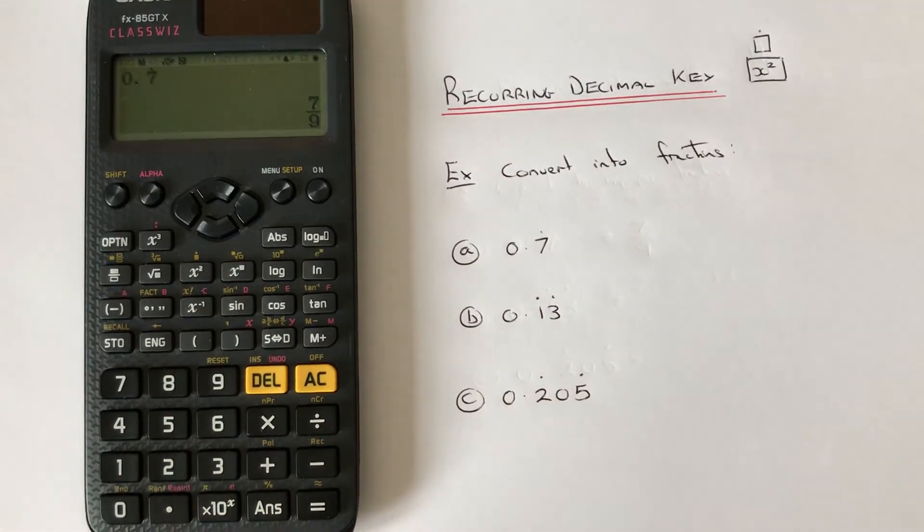Hi guys, welcome back. This is Maths 3000. Today I'm going to show you how to use the recurring decimal key to convert a recurring decimal into a fraction on a Casio scientific calculator.